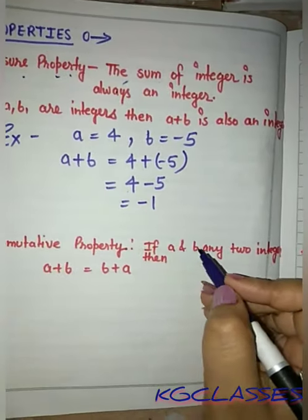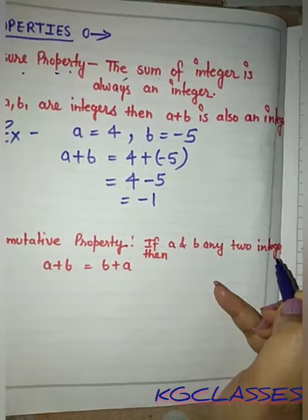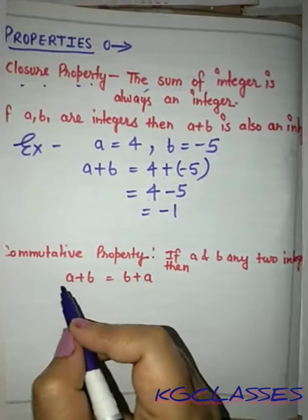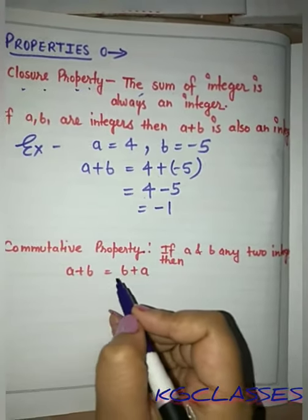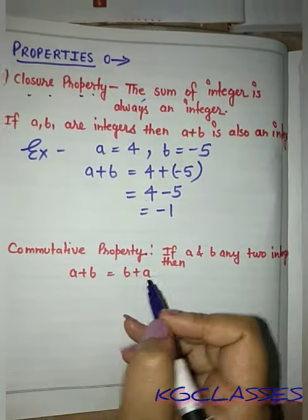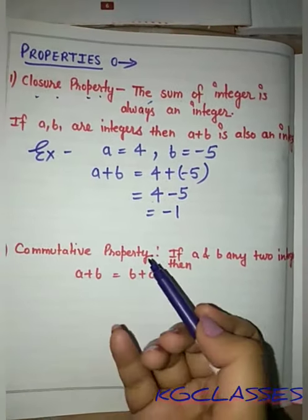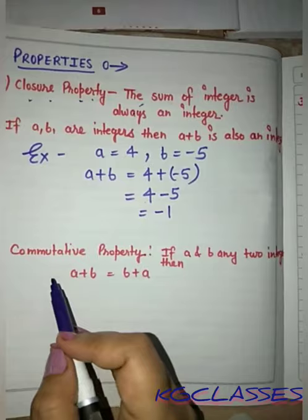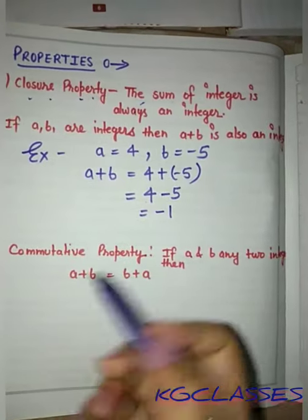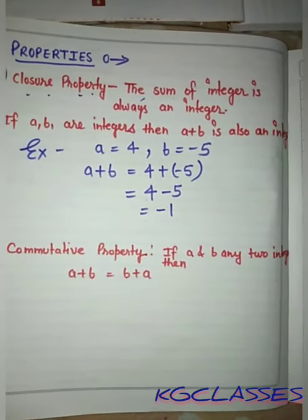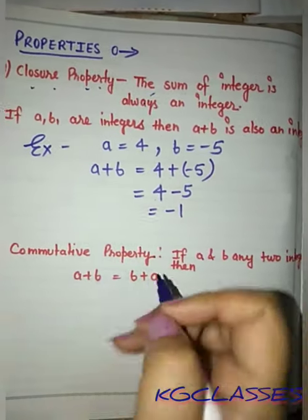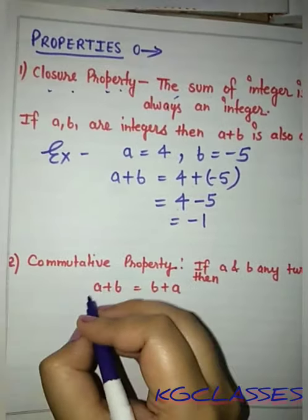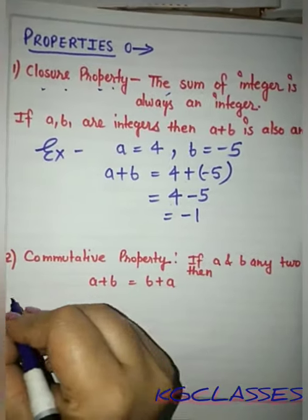The next property is the commutative property. If a and b are any two integers, then a plus b is equal to b plus a. If we change their positions, the answer will be the same when we add them. Let's take an example.